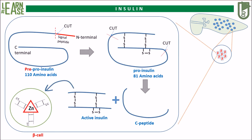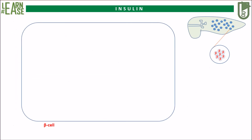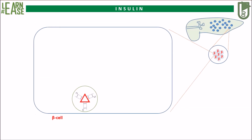Inside these vesicles, three matured insulin molecules are bound to one zinc molecule and stabilized until secreted, which I will explain in the upcoming animation. The beta cell containing the vesicles in which insulin is stabilized by zinc is shown.